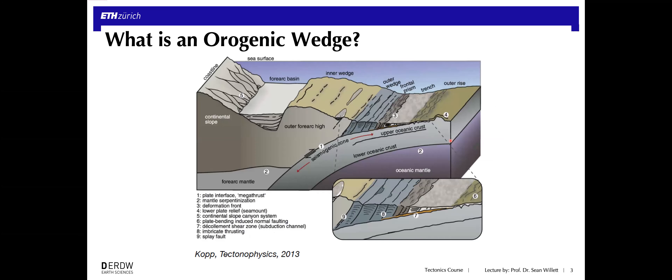In closer view, we again identified the accretionary wedge as being this wedge-shaped block of deformed crustal material. In this case, it's mostly formed by sediment that is brought in on the subducting plate and is then accreted through a series of thrust faults — which are what you're seeing here — into thrust sheets or blocks that are incorporated and deformed into this accretionary wedge-shaped body.